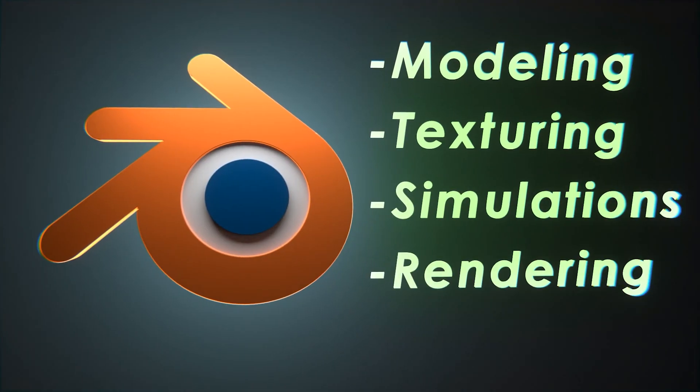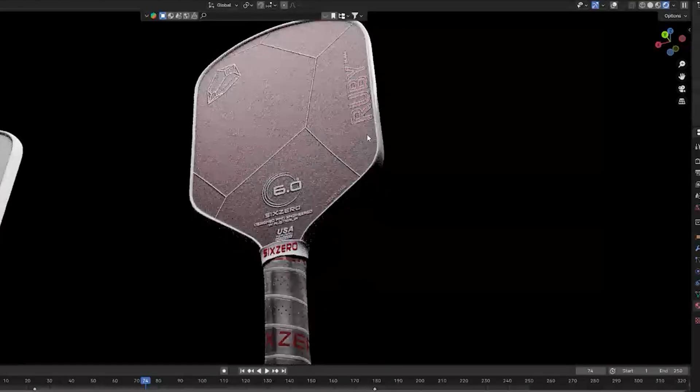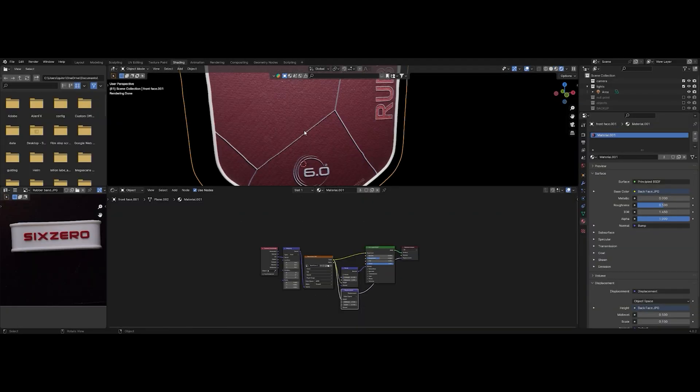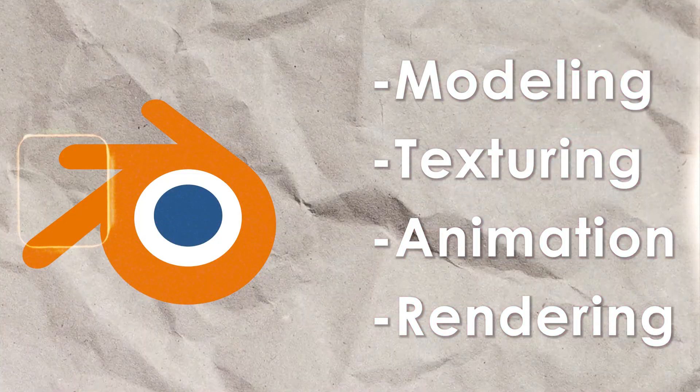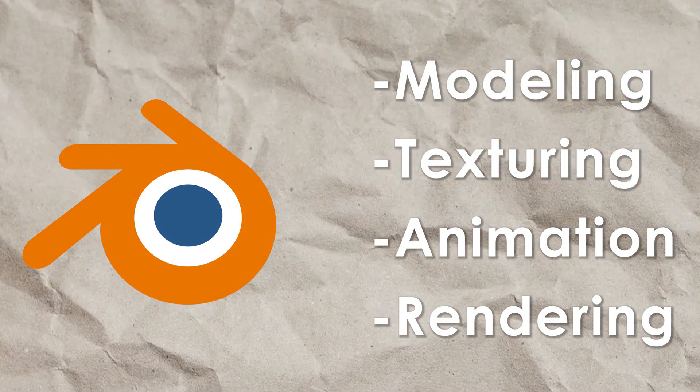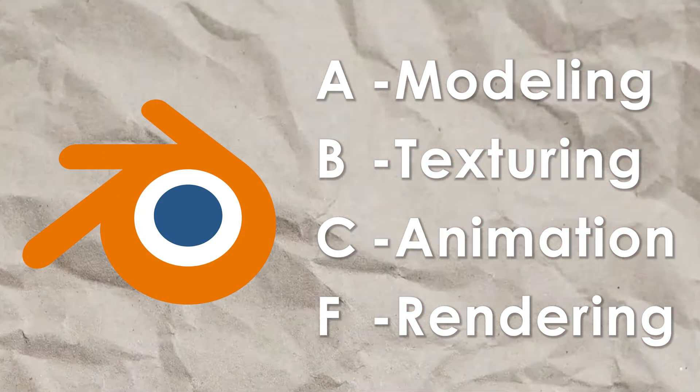It's the exact same thing with Blender. A veteran 3D artist may want a more advanced simulation system and more modeling tools, but to a newer user, those tools aren't going to make a difference. Becoming a master of the fundamental tools they already have access to is going to be way more beneficial. This video will go through the major tool categories and grade them — A, B, or C — so you can see Blender's strengths and weaknesses.